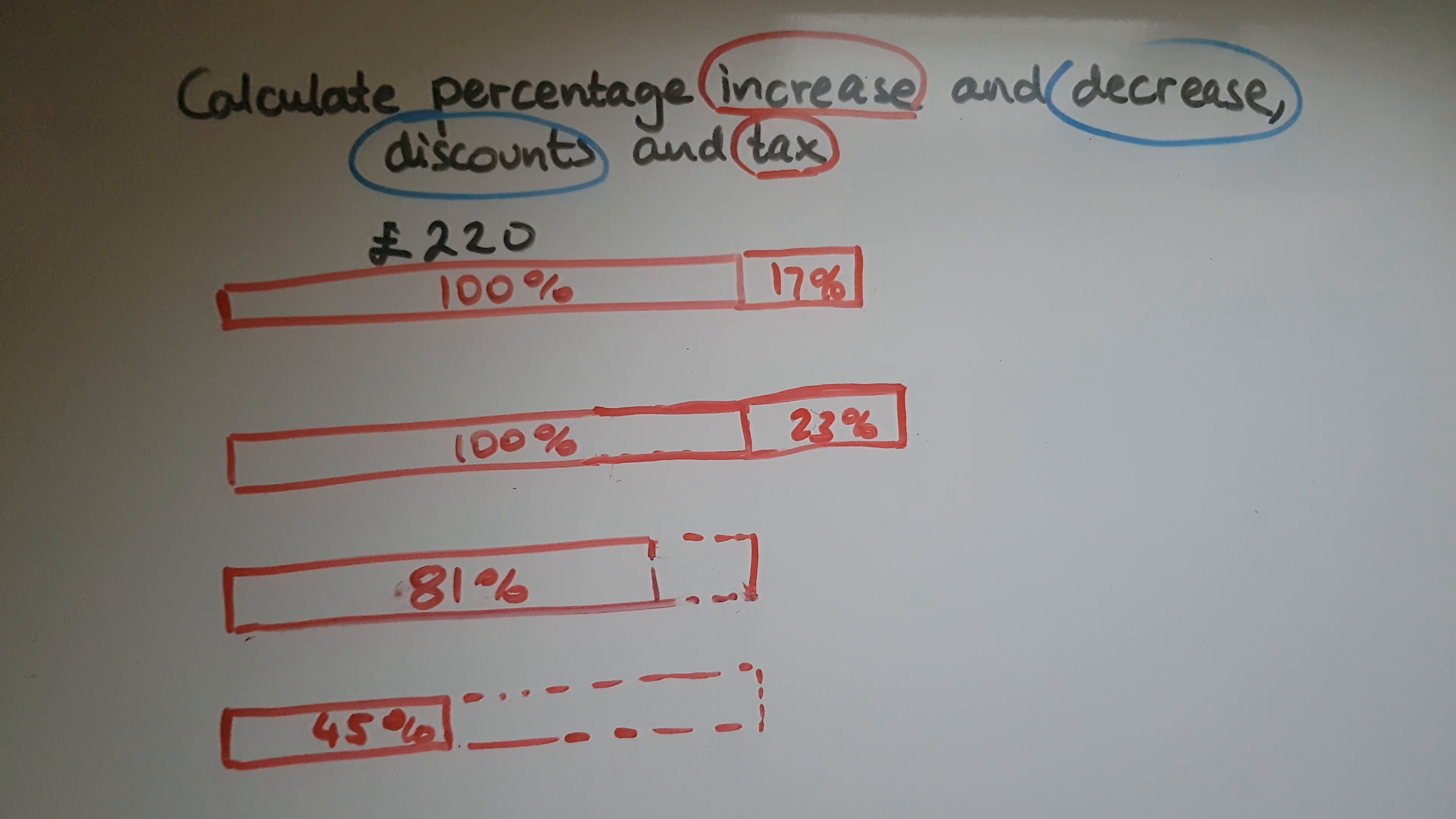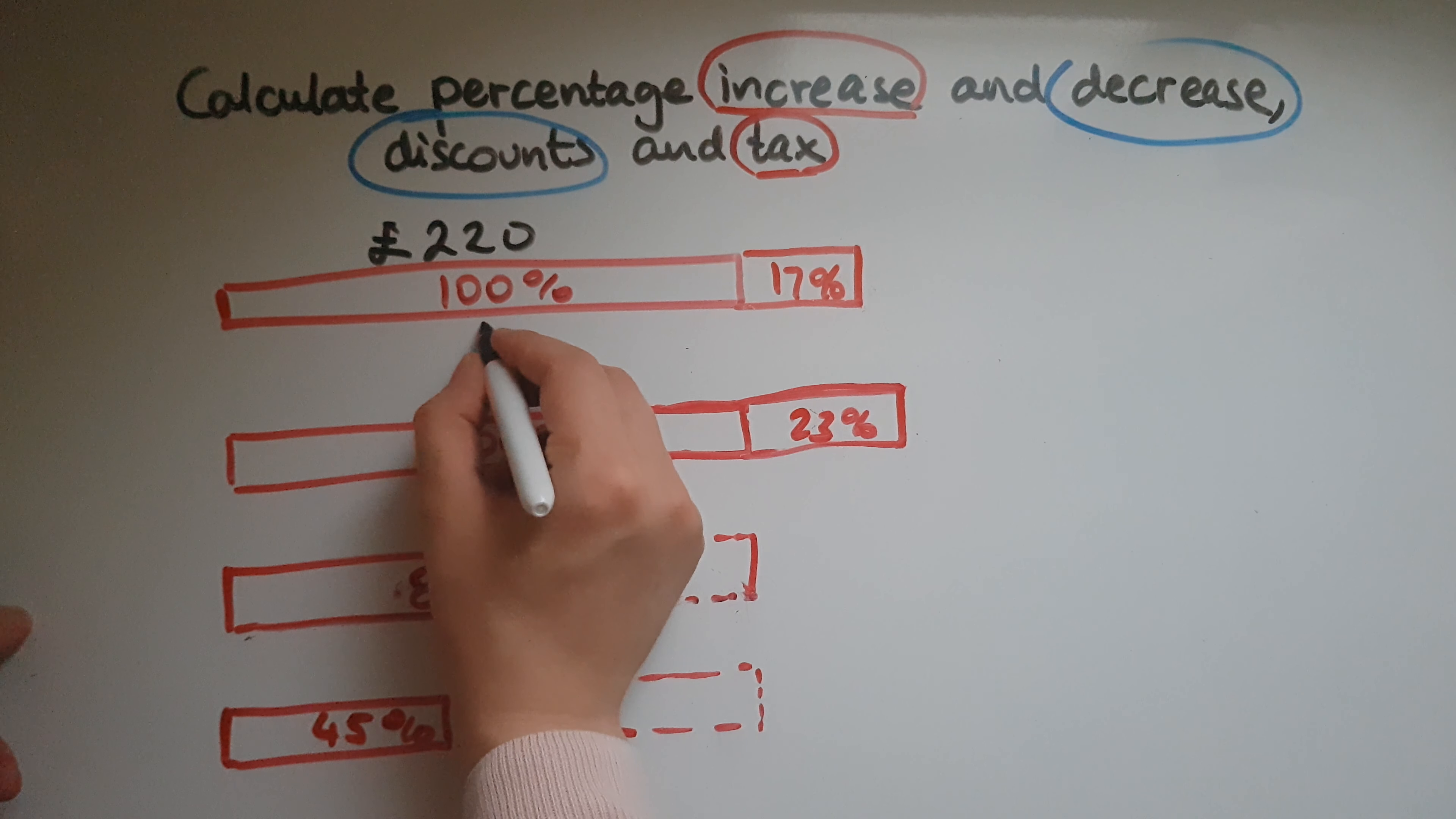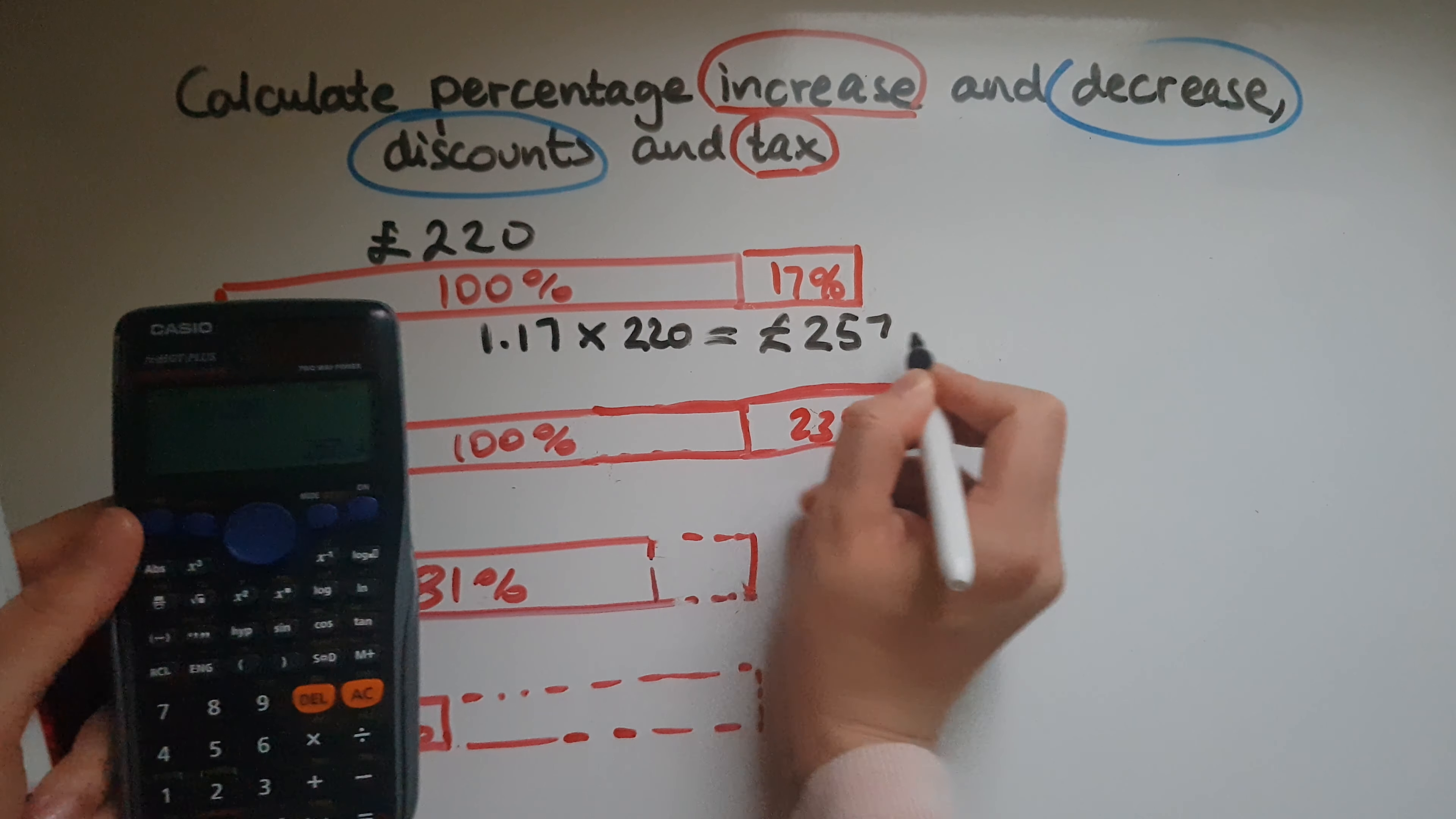So what is that amount? The way to work it out is to work out 17% of £220. The easiest and most straightforward method would be to get the total increase. So we go 100% and 17%, that is 117%. We can write that as a decimal, 1.17, and then multiply it by the amount, 220, the 100% amount. That will give us the price with the increase included. So 1.17 times 220 is £257.40.